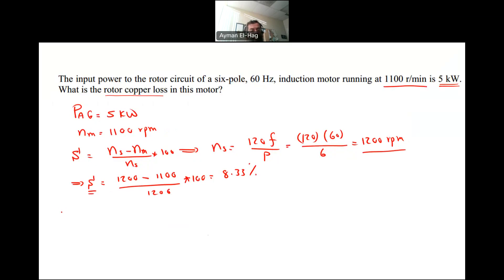Now, once I know the slip, I can find the P convert, which is nothing but 1 minus the slip times PAG, which is equal to 1 minus 0.0833 times the 5 kilowatt. And this will give me a power of 4.584 kilowatt.